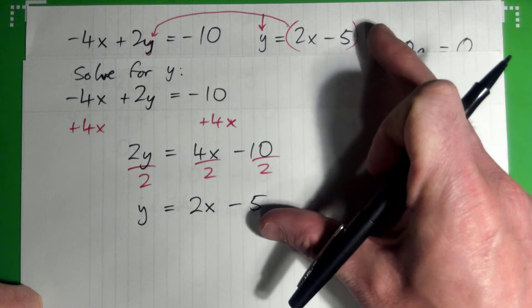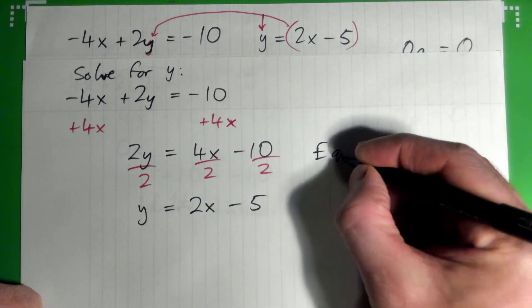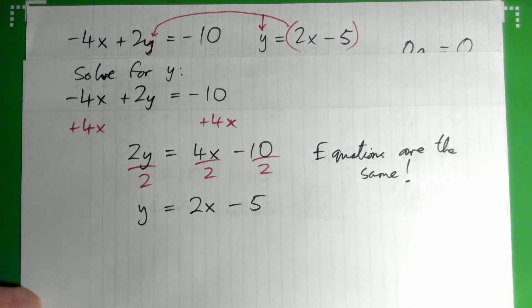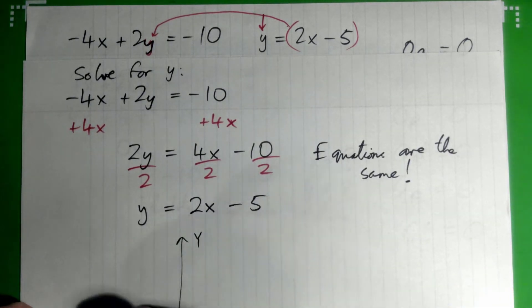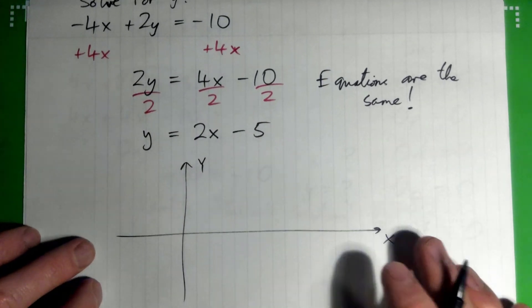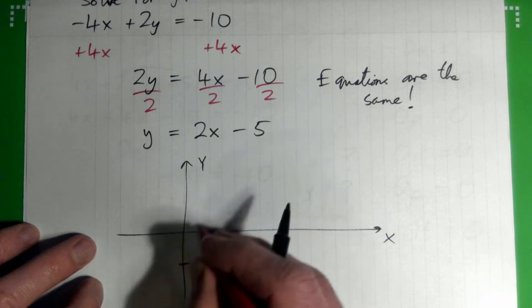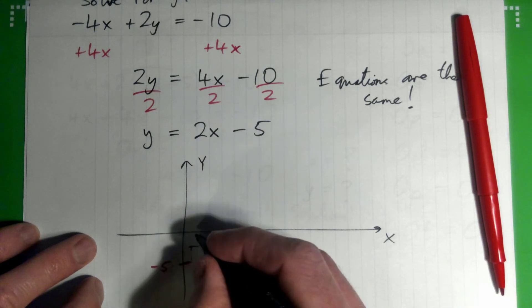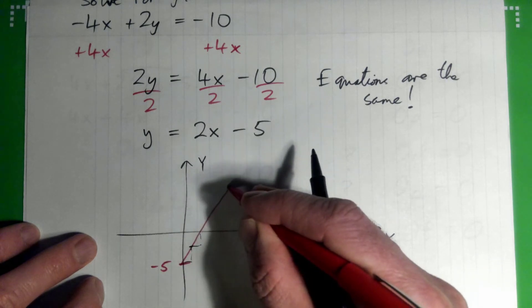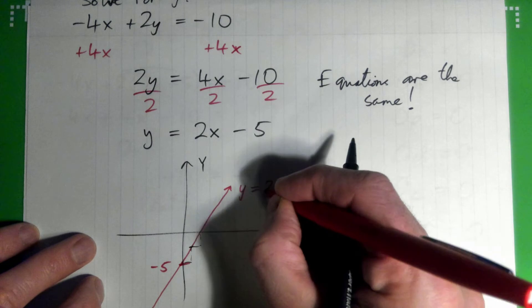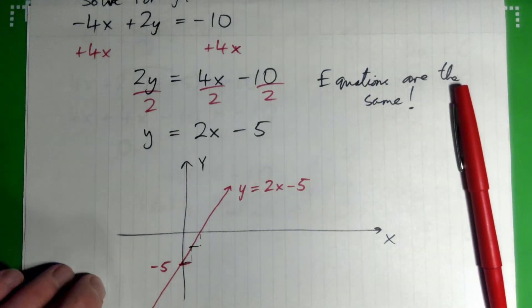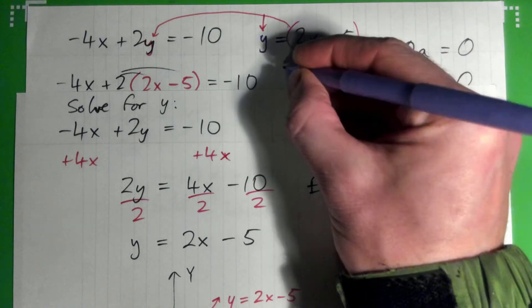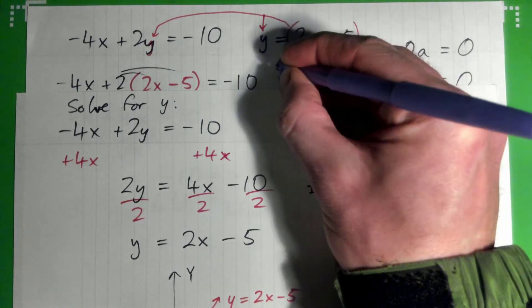Interesting — that's y equals 2x minus 5. But that was the first equation! And when we solve the second equation for y, we also get y equals 2x minus 5. So what can we say about the first and second equations? The equations are the same. If we graph them, the y-intercept is negative 5 and the slope is 2 — so the graph looks like this.